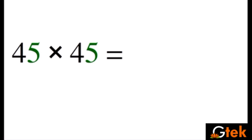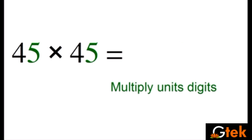45 into 45. My unit place is 5 and 5. 5 into 5 is 25. So I am going to write it. Multiplying unit digits I am getting 25.